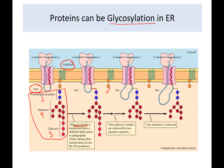Once the oligosaccharide is transferred onto the protein, there is some modification: three glucose residues are removed by an enzyme, and then one mannose is removed. Glycosylation is also important for protein folding. Once the protein is released into the membrane or the ER lumen, this acts as a signal for certain proteins to help ensure proper protein folding.